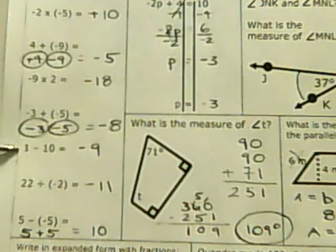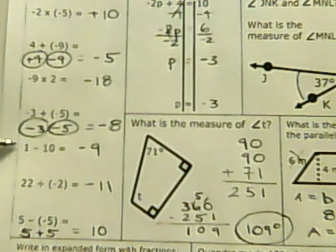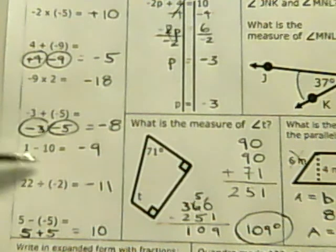1 minus 10. A lot of people get tricked here and put 9, but it's 1 and take away 10. If you only have 1 and you take away 10, that's negative 9. The way we look at it in algebra is you have a positive 1 and a negative 10.